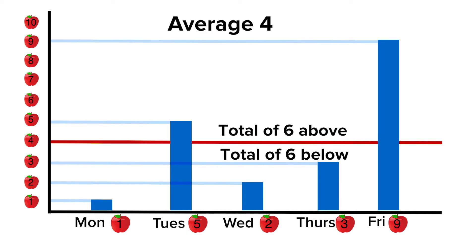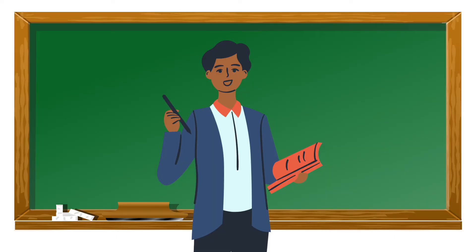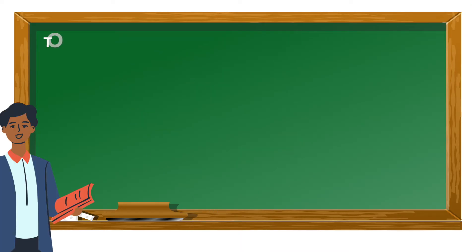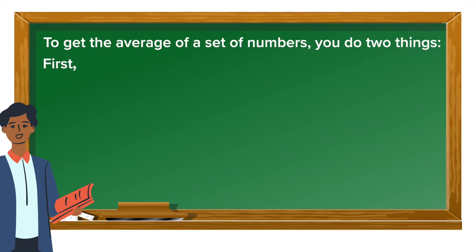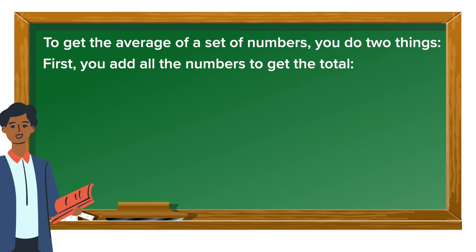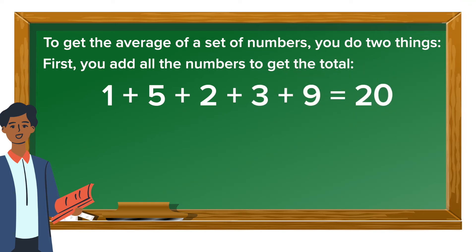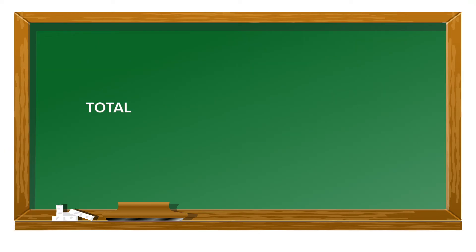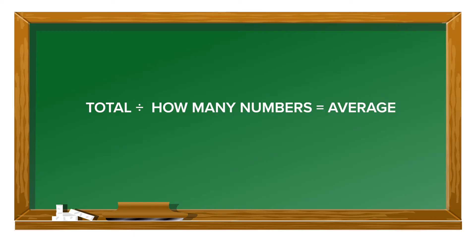So we've just looked at a visual way to think about average. Now let's see if there's a math procedure that will get the same result. To get the average of a set of numbers, you do two things. First, you add all the numbers to get the total: one plus five plus two plus three plus nine equals twenty. Once you have the total, you divide it by how many numbers there are. In math, average is the answer you get when you take the total of a set of numbers and divide that total by how many numbers there are.